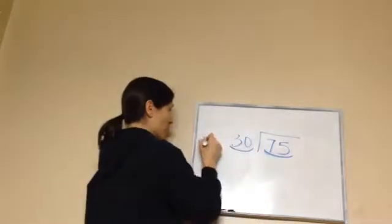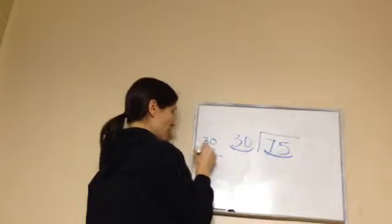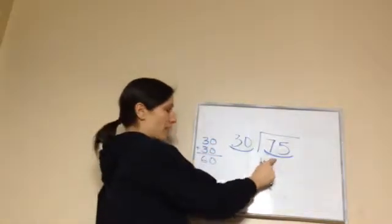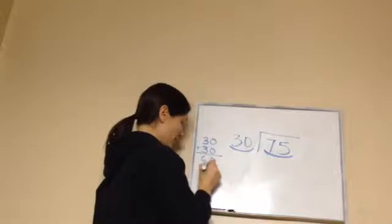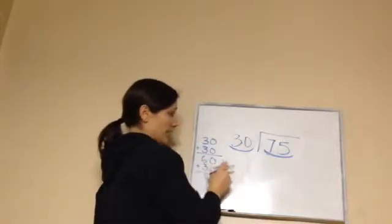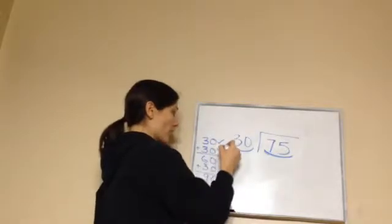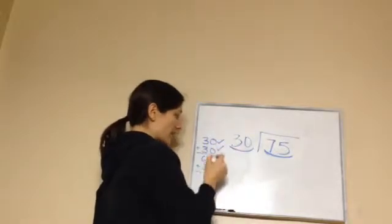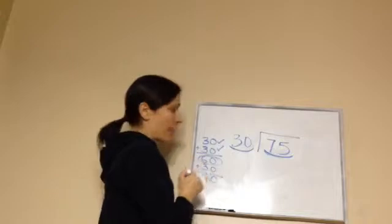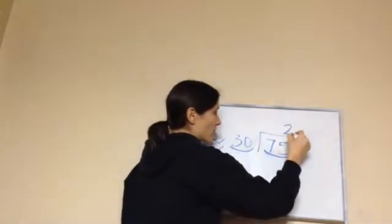What you would do is take 30 plus 30, and that equals 60. Did we reach 75? Not yet. Let's try one more 30, and we would get 90. So we went over. So two 30s equals 60, which is the closest we can get to 75 without going over. So we would say 2 right here.